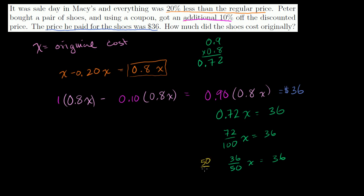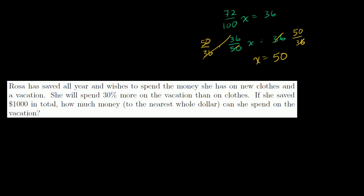And so I can multiply both sides by the inverse of this. 50 over 36 times this. I have to do it to both sides of the equation. 50 over 36. The 36s cancel out, 50s cancel out. And you're left with x is equal to $50. The shoes originally cost $50. Next question.